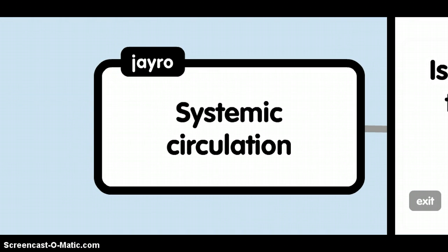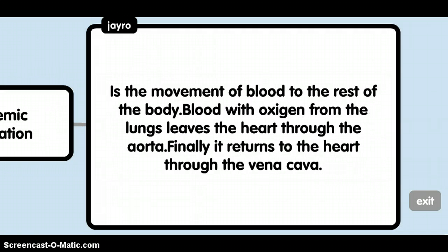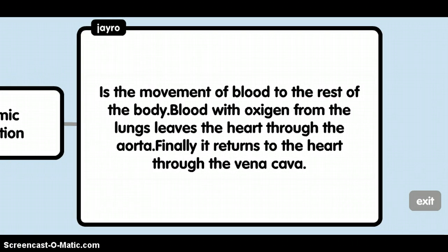Systemic circulation is the movement of blood to the rest of the body. Blood with oxygen from the lungs leaves the heart through the aorta. Finally, it returns to the heart through the vena cava.